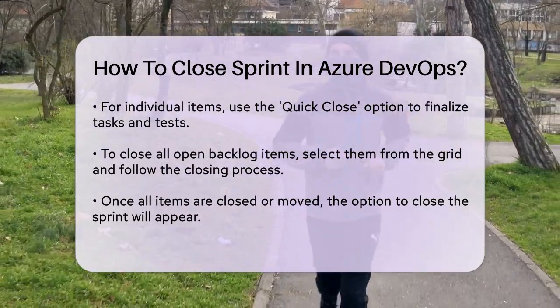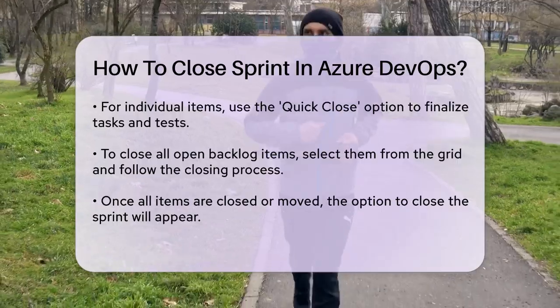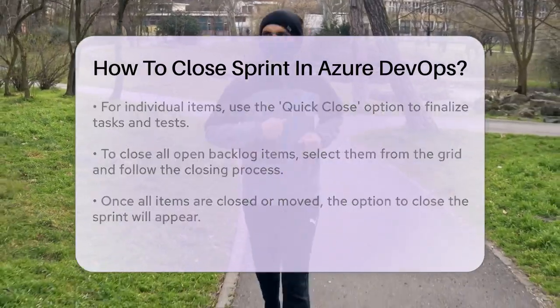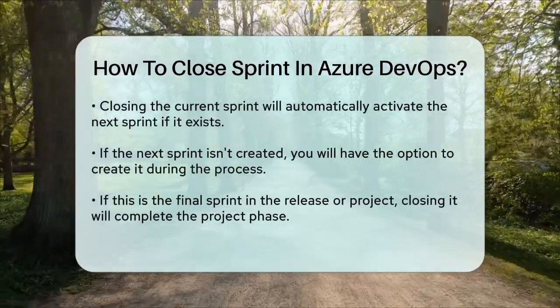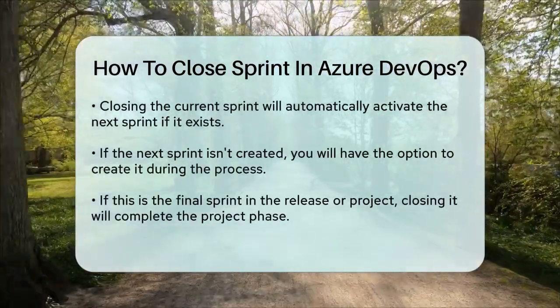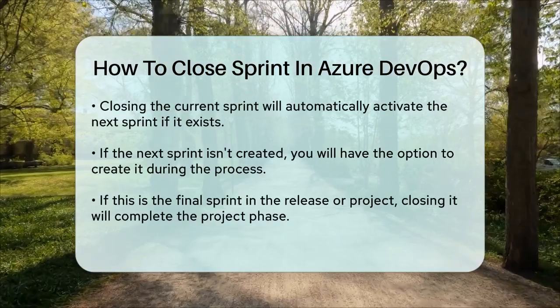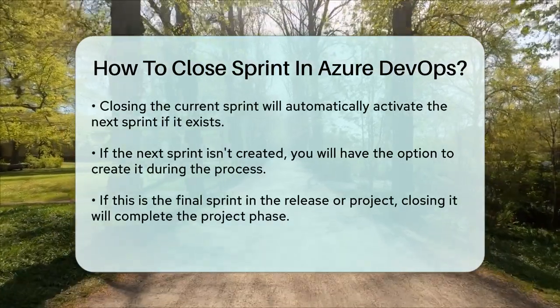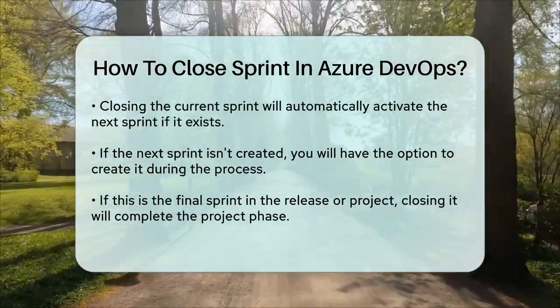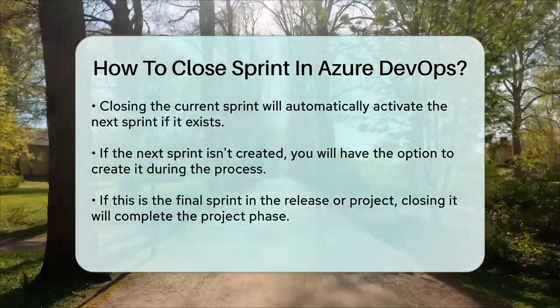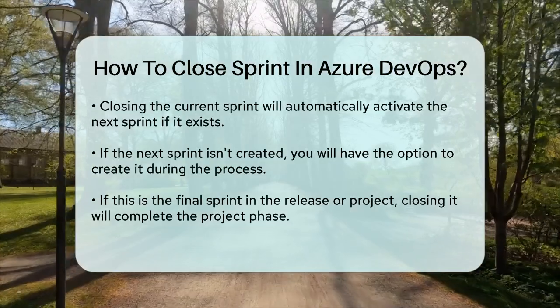If the next Sprint or iteration already exists, closing the current one will automatically activate the next Sprint. If the next Sprint hasn't been created yet, you'll have the option to create it right there.